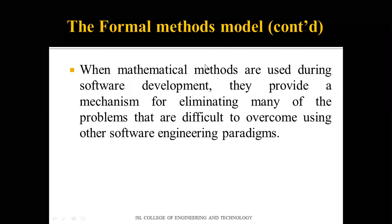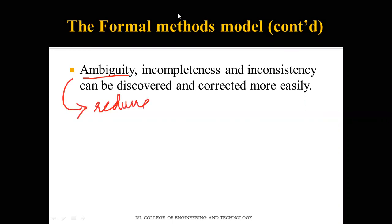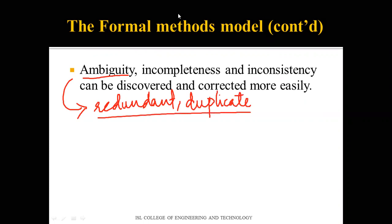Mathematical models are used to eliminate multiple problems. The first is ambiguity — which refers to any type of redundant or duplicate data. The formal methods model helps find duplicate values and errors that might normally go undetected, so you can remove them.